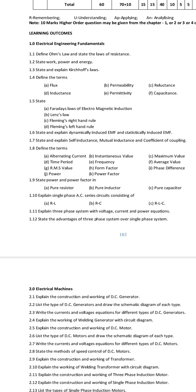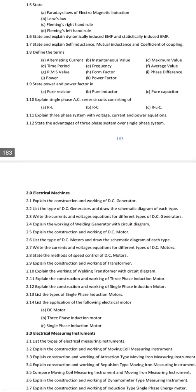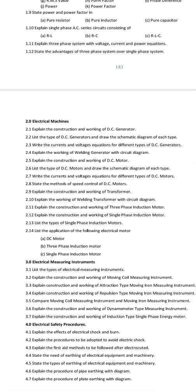For short answer questions, 1.4 is permeability and permittivity. And 1.5 is also important. There are many terms to define. Short answer questions are different from essay questions. Review all important short answer questions carefully, as some important short answer topics can also appear as part of essay questions.